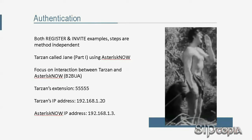Let's start with authentication. Since these are method-independent, let's use two different requests — REGISTER and INVITE — to go over some examples. This is also a perfect opportunity to recycle the sample call we analyzed in RFC 3261 simplified series part 1 between Tarzan and Jane using an Asterisk PBX. Tarzan has a SIP phone with extension 55555 at IP address 192.168.1.20 and the Asterisk PBX is at IP address 192.168.1.3.